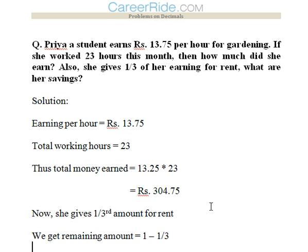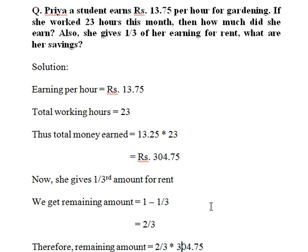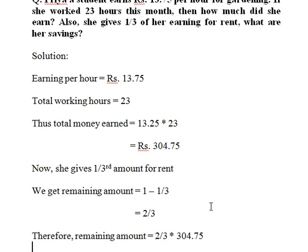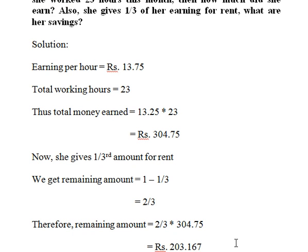Now she gives 1/3 amount for rent. So 1/3 of 304.75, and leftover is 2/3. The remaining amount will be 2/3 of 304.75. So we get the answer as 203.167.